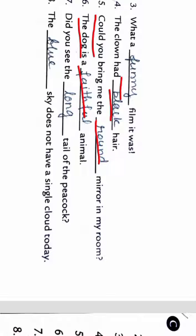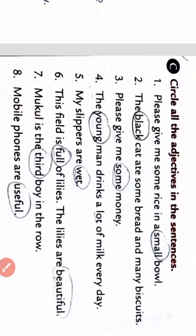Then 7: Did you see the blank tail of the peacock? How was the peacock's tail? Long. Then 8: The blank sky does not have a single cloud. Which color is the sky? Blue. Which I have given in the option. The answer will be blue. Now question number C.